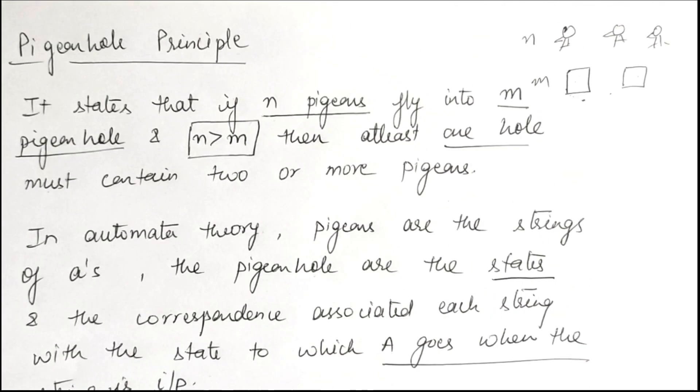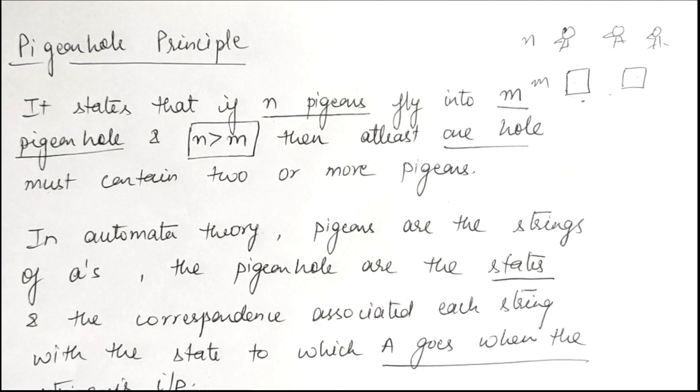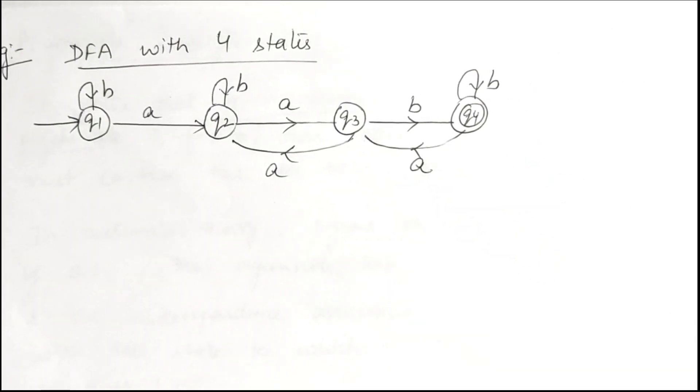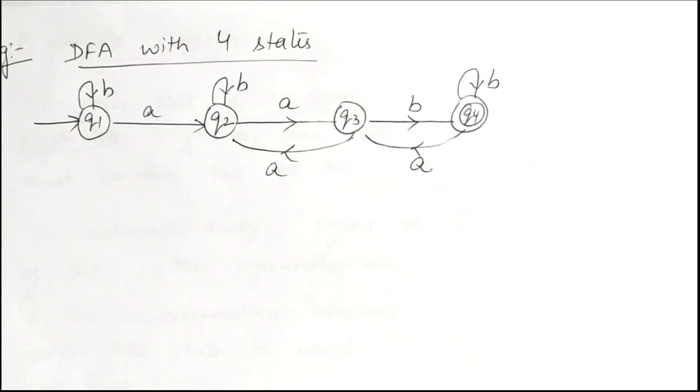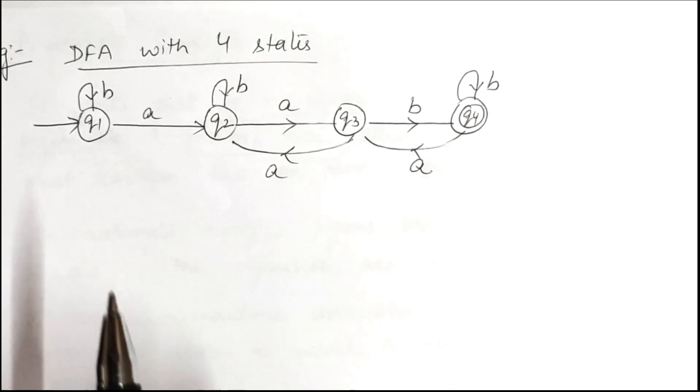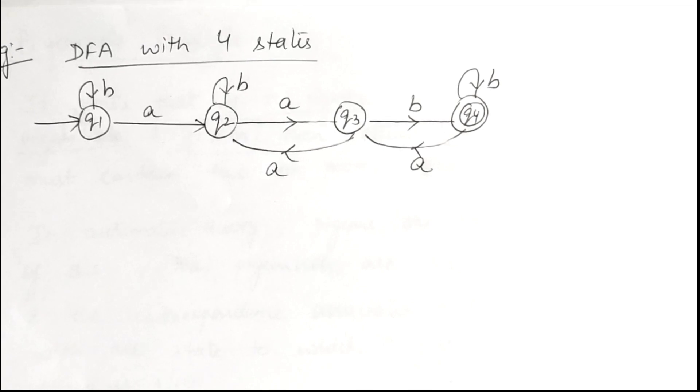We will explain with the help of an example. Suppose we have a DFA with four states: q1, q2, q3, q4, in which q1 is the initial state and q4 is the final state.